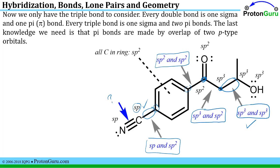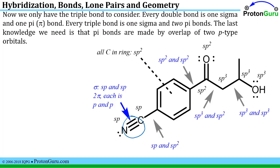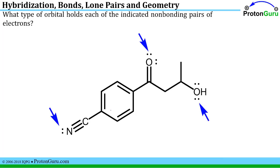For a triple bond, we must remember that every double bond has one sigma bond and one pi bond, and every triple bond has one sigma bond and two pi bonds. Every pi bond is made by overlapping p-type orbitals. So for a C–N triple bond, the sigma bond is made by overlapping two SP hybridized orbitals, and each of the two pi bonds is made by overlapping a p-orbital with a p-orbital.